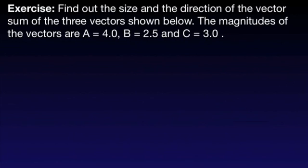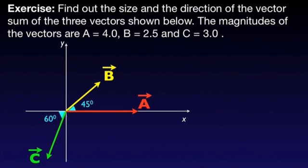Now it's time for a simple worked example. The goal of this exercise is to find out the size and the direction of the vector sum of the three vectors shown below. The magnitudes of the vectors are A equals 4, B equals 2.5 and C equals 3. In addition, the angles that vectors B and C make with OX axes are given, 45 degrees and 60 degrees respectively.